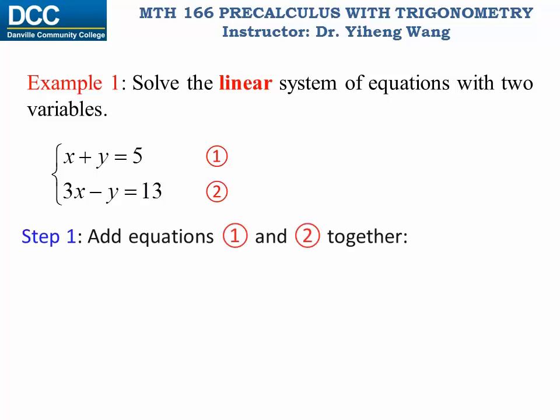The first step is to simply add equations one and two together. So this is equation one, equation two, add them together. x plus 3x is 4x, and y gets cancelled out. On the right hand side 5 plus 13 is 18.